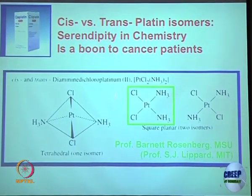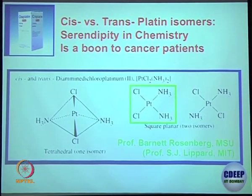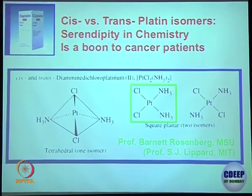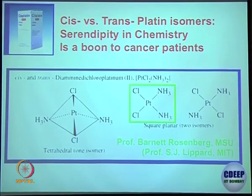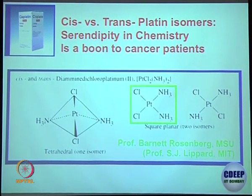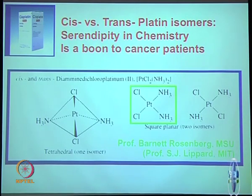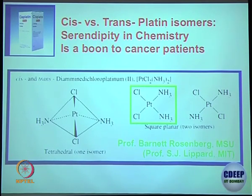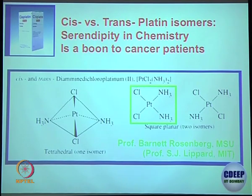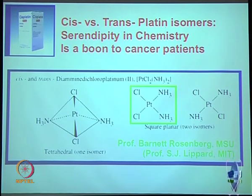Cisplatin is a simple platinum-containing molecule. We are trying to keep this class as simple as possible so we can correlate the concepts. This is cisplatin, and this is transplatin. It is called cis because the two chloro groups are cis and the two ammonia groups are cis. Transplatin means they are trans to each other.